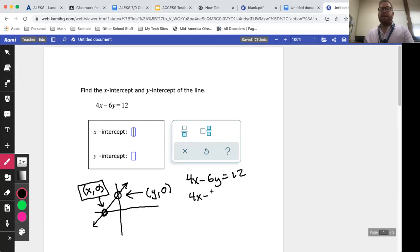This really neat thing happens where it goes away because six times zero is zero, so you wind up with 4x = 12. Then you can just solve for X by dividing both sides by four, and you get x = 3.